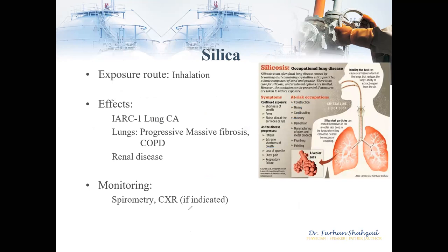The next topic is silica — another very common pneumoconiosis in Australia. With a similar route of inhalation, it is a level one carcinogen that leads to chronic obstructive pulmonary disease and renal disease, monitored similarly with spirometry and chest x-rays. It can present with shortness of breath, fever, cyanosis — low oxygen levels — fatigue, extreme shortness of breath, loss of appetite, and chest pain. Industries at high risk include construction, mining, sandblasting, and masonry.